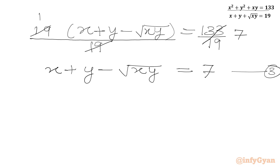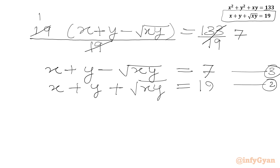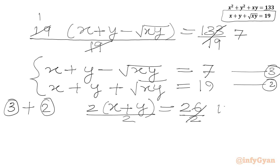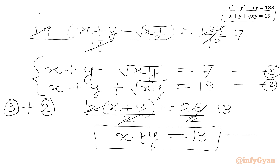Now writing equation 2 alongside equation 3: x plus y plus square root of xy equals 19, and x plus y minus square root of xy equals 7. Adding these two equations, the square root of xy terms cancel, giving 2 times x plus y equals 26. Dividing both sides by 2, we get the important result: x plus y equals 13, which we call equation 4.